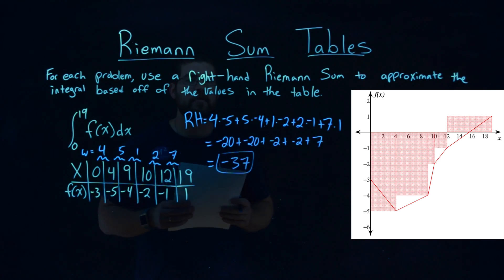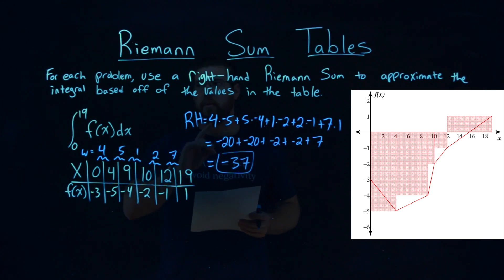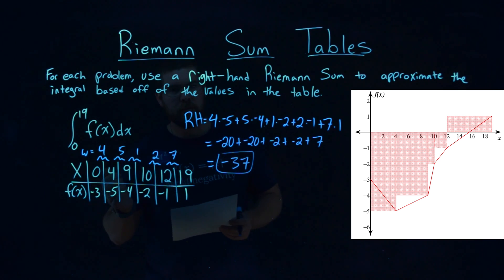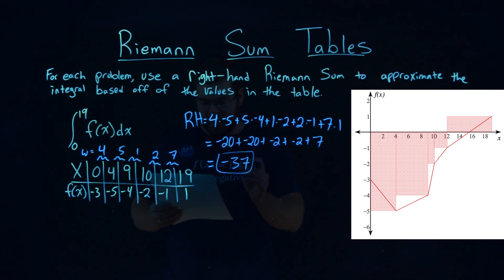And that's it. Our Riemann sum, our right-hand Riemann sum to approximate the integral based off the values below of our function is negative 37.